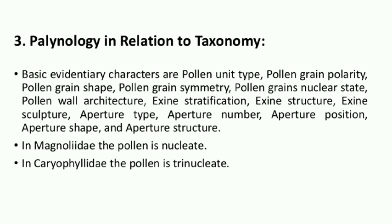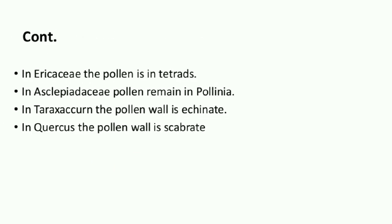For example, in Magnoliidae the pollen is binucleate. In Caryophyllidae the pollen is trinucleate, means three nuclei. For example, in Ericaceae the pollen is in tetrad. In Asclepiadaceae, pollen remains in pollinia — for example the plant Calotropis. In Taraxacum, the pollen wall is echinate. In Corcus, the pollen wall is scabrate. Like that, various plant species have various designs of the pollen. Hence, palynology helps in identifying the species name.